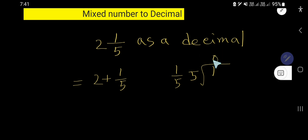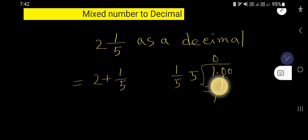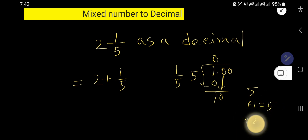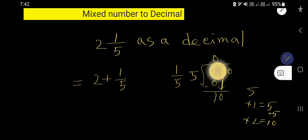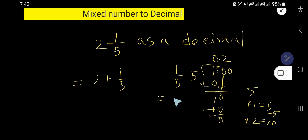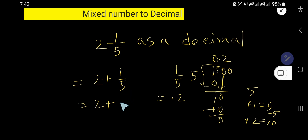Five goes into one zero times. Zero times five is zero; subtract and you get one. Since this one is a whole, you can change it to a decimal by placing a decimal point after it and bringing down a zero. Five goes into ten two times. Two times five is ten, so one over five equals 0.2.